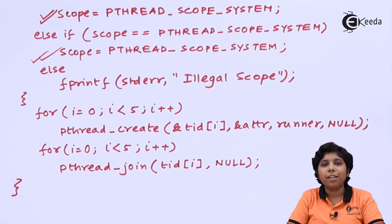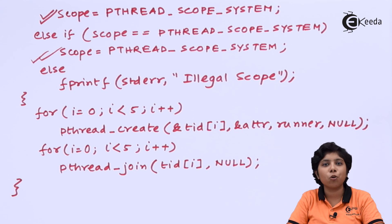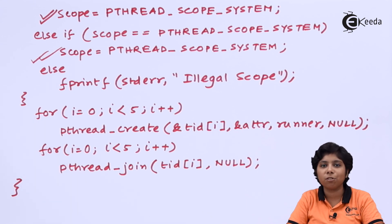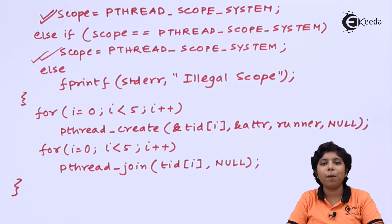In this way, the main function first reads the current scope of the process, sets the scope to PTHREAD_SCOPE_SYSTEM, then creates five threads and waits for their execution to complete. This demonstrates how the POSIX PThread standard can be used to control thread scheduling contention scope.